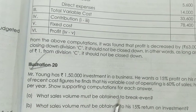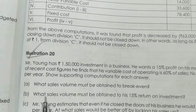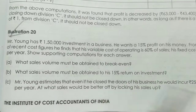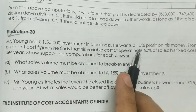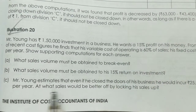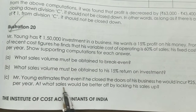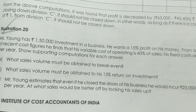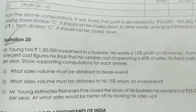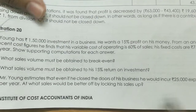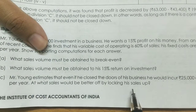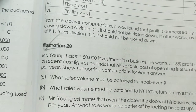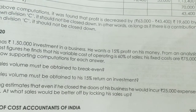Show supporting computation for each answer. What sales volume must be obtained to break even? How much sales volume must be obtained to earn a 50% return on investment? Mr. Young estimates that even if he closed the doors of his business, he would incur 25,000 expenses per year as fixed costs.